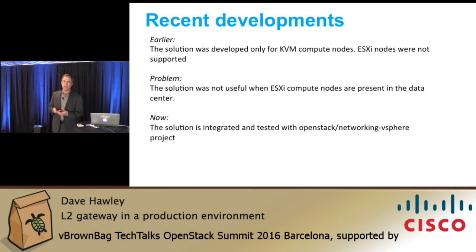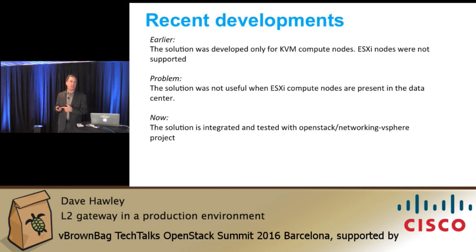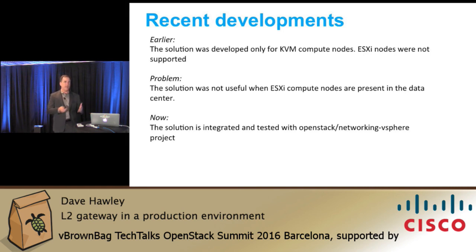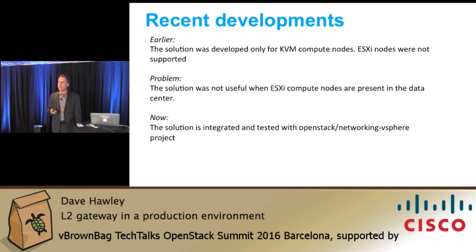Another area this team has been working on is ESX compute nodes using the networking vSphere project, so that you can have OVS running inside an ESX virtual appliance. The Layer 2 Gateway function now interoperates with that ESX environment. So if you have a heterogeneous hypervisor environment with a mix of KVM and ESX, you can also support bare metal servers in that same environment. You don't have to make any trade-offs in terms of the breadth or combination of services you provide within that cloud — KVM, ESX, and bare metal.